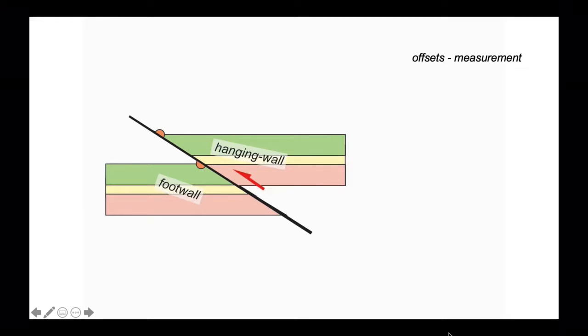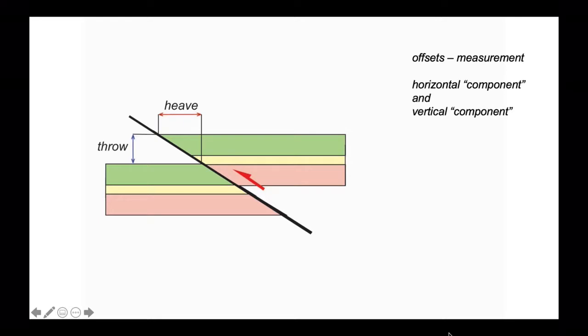This is a useful measurement but often it's difficult to make directly. So we use proxies. One proxy is heave which is the horizontal component. The other proxy is throw which is the vertical component.